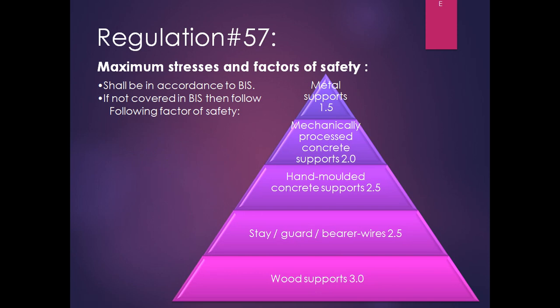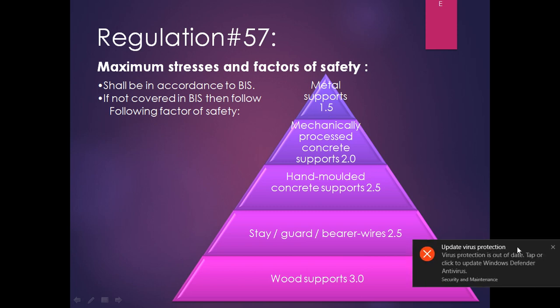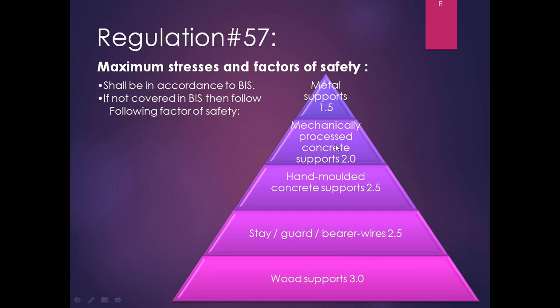Regulation 57 is regarding maximum stresses and factor of safety. It shall be in accordance with BIS. However, if not covered in BIS, we have to follow the following factors of safety: for metal support, minimum 1.5; for mechanically processed concrete support, minimum 2; for hand molded concrete support, minimum 2.5; for wooden support, minimum 3.0; and for stay wire, guard wire, and bear wire, minimum 2.5.